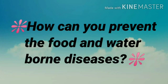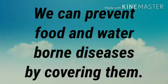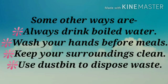In your previous module, you have also studied that insects like flies and cockroach spoil the food. So how can you prevent the food and water-borne diseases? We can prevent them by covering food and water. Some other ways are: always drink boiled water, wash your hands before meals, keep your surroundings clean, and use a dustbin to dispose of waste.